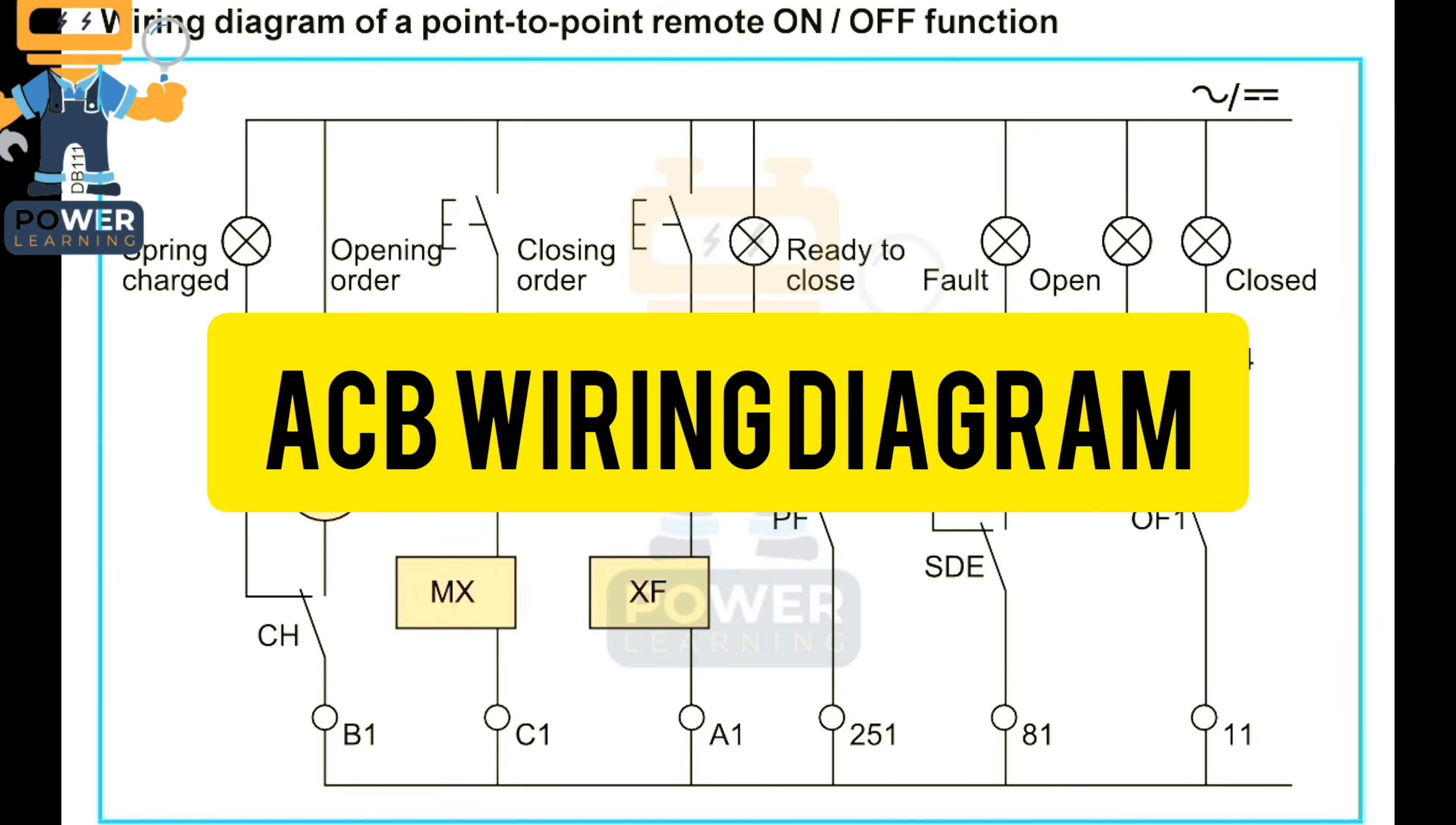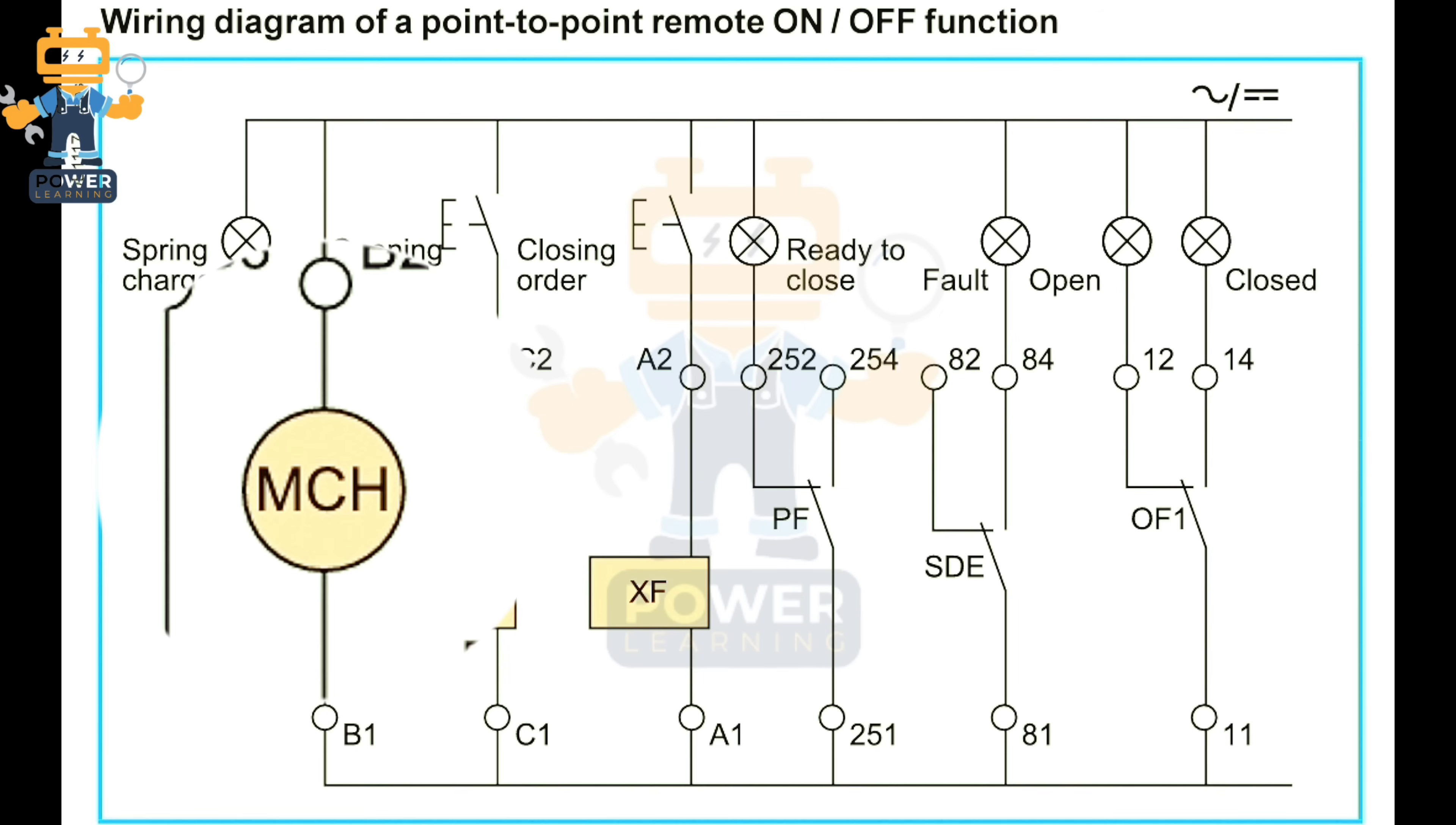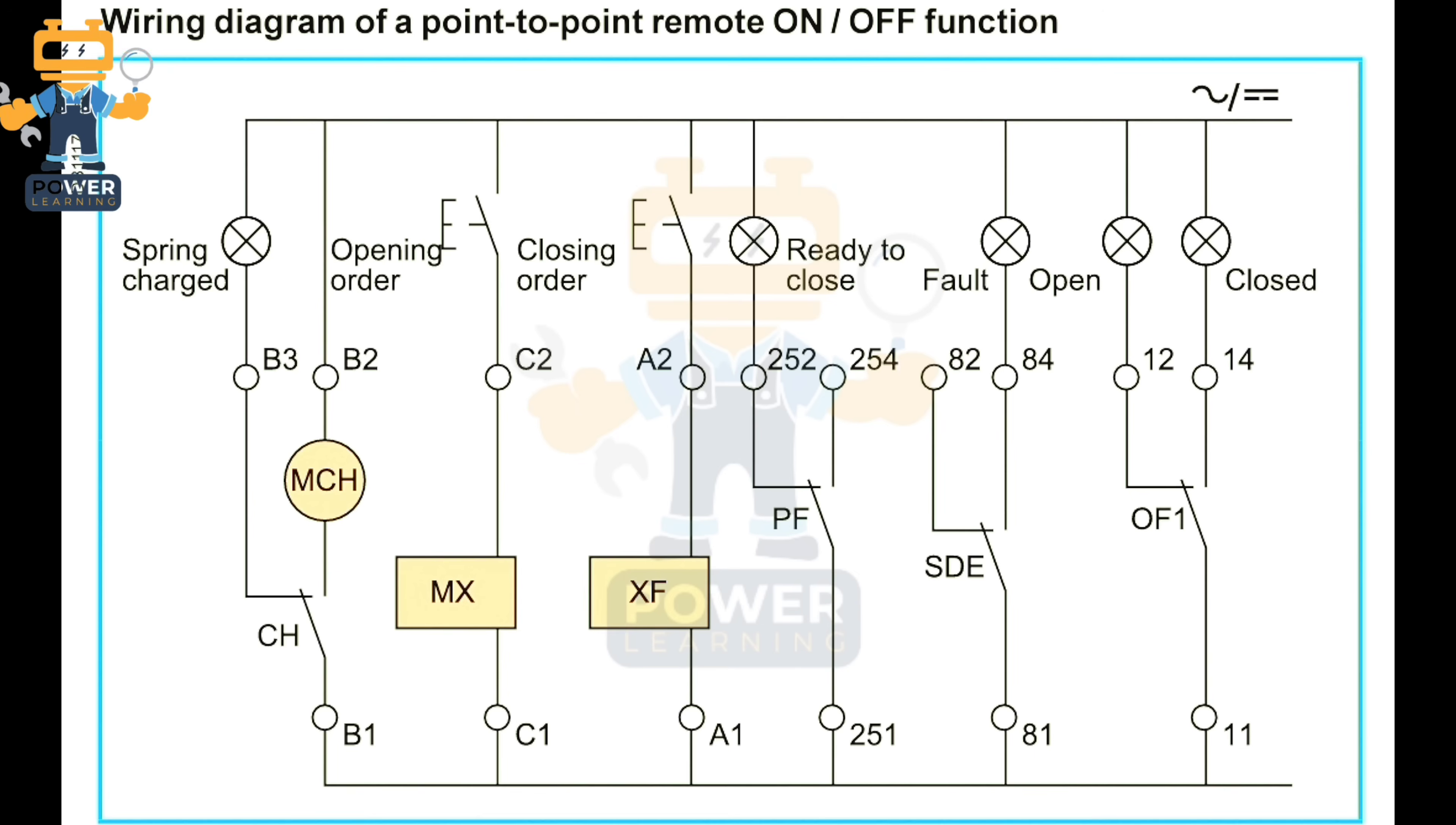Now in front of us we have the point-to-point remote ON/OFF function wiring diagram of our ACB. In ACB we first of all need to know what accessories we have which will help us to operate the ACB automatically. Now you see here we have first one symbol MCH, one is MX, and other one is XF. Other than this we have spring charged, opening order, closing order, ready to close, fault, open indication, and closed indication.